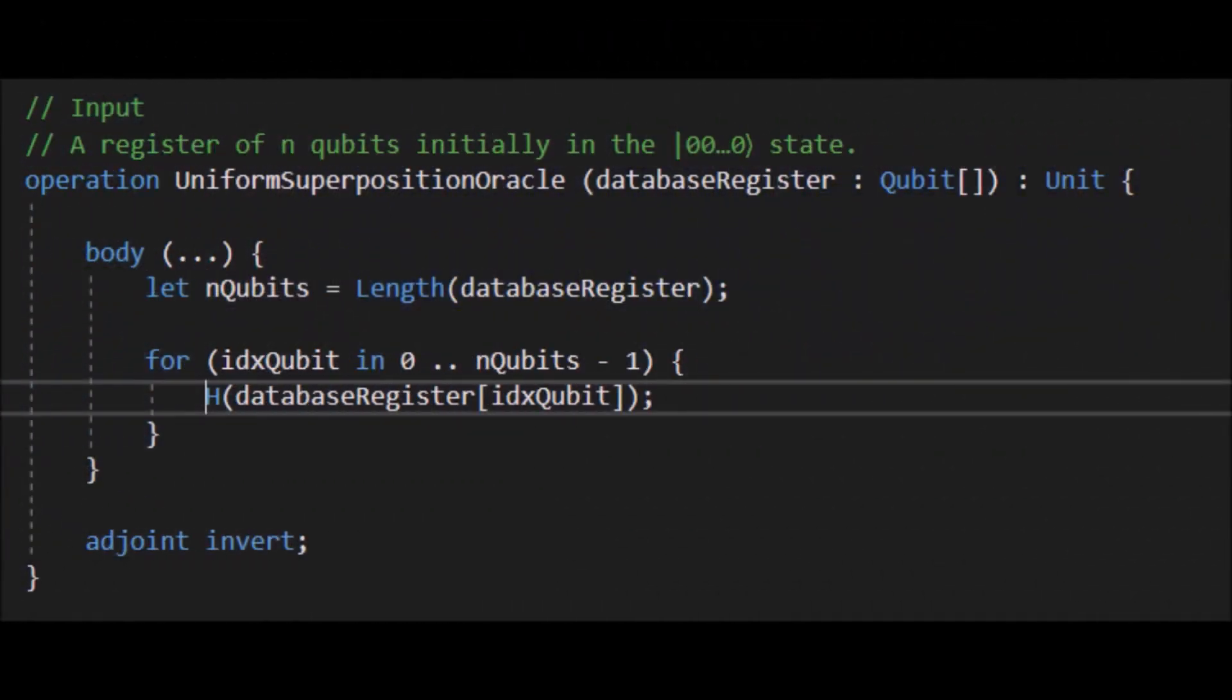Here is the actual code to do this Hadamard transform. Basically, I'm just setting a register length, and then I'm iterating through that register and applying a Hadamard gate to each of the wires in the register.